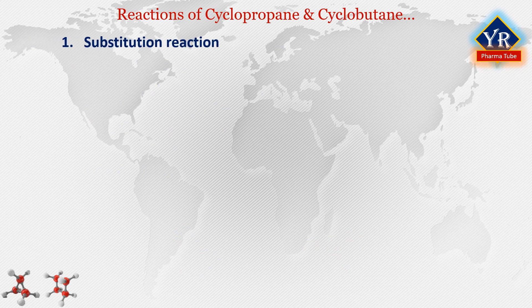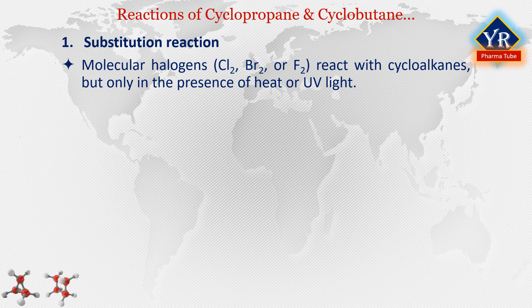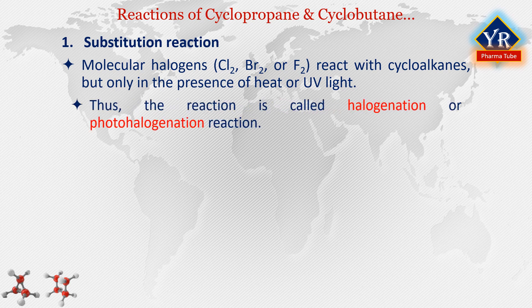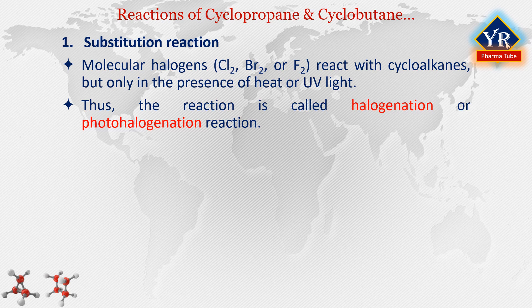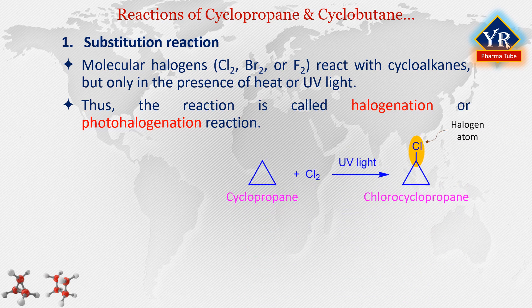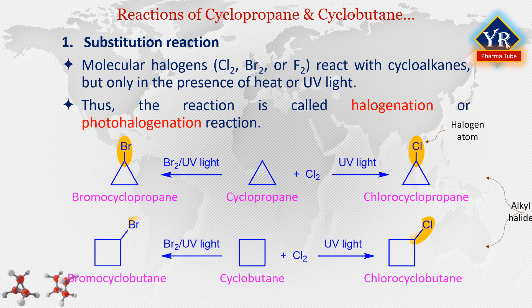Substitution reaction with chlorine or bromine: Molecular halogens such as chlorine, bromine, or fluorine react with cycloalkanes but only in the presence of heat or UV light. Thus, the reaction is called halogenation or photohalogenation. In this reaction, a halogen atom such as chlorine, bromine, or fluorine is substituted in the place of a hydrogen atom of a cycloalkane to form an alkyl halide. The term alkyl halide encompasses any organic compound containing one or more halogen atoms. Cycloalkanes react with chlorine or bromine in the presence of diffused sunlight or UV light to give monochlorination and monobromination products respectively. In each case, only one monosubstitution product is possible because all hydrogens are chemically identical.